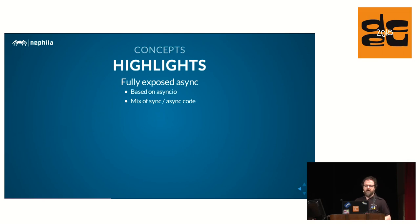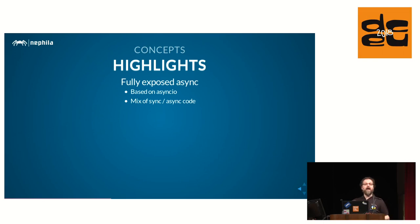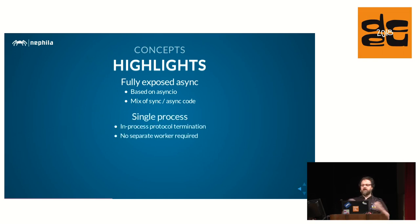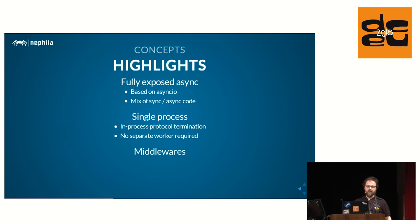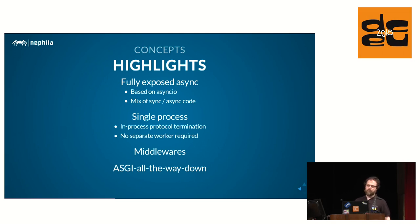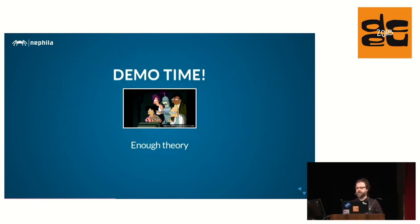A brief recap: channels exposes its asynchronous interface and uses AsyncIO, so it's Python 3 only. This allows you to write both synchronous and asynchronous code in channels, making you much more free to do your own implementation. It changed the way it handles the connection - now everything runs in the same process, so Django and the consumers run together. This allows consumers to be stateful. You also have middlewares similar to WSGI ones, and the ASGI all-the-way-down approach makes it much more flexible.